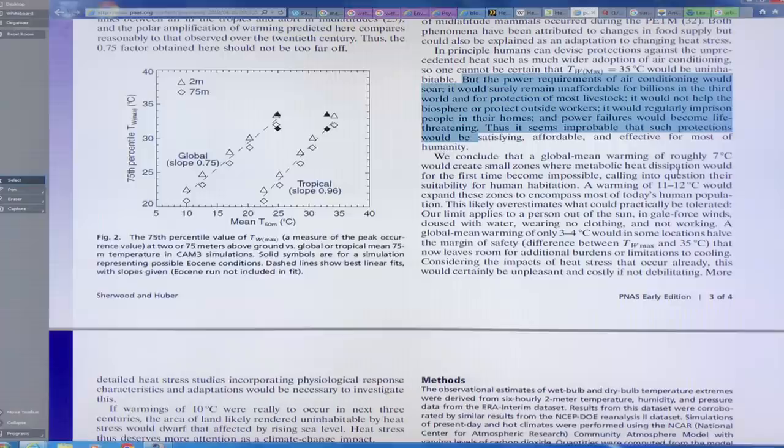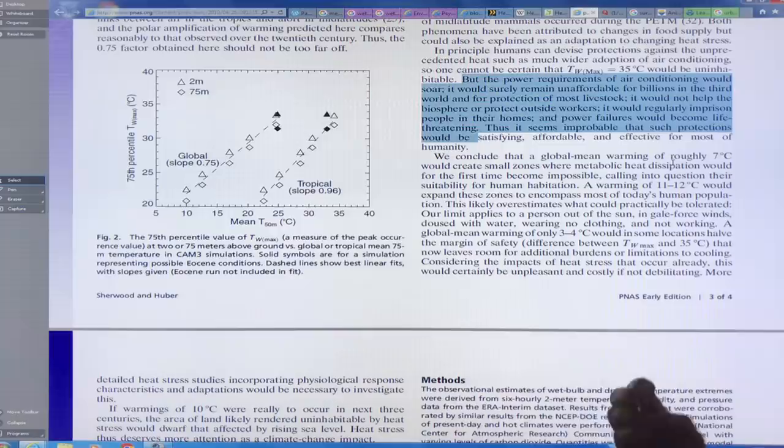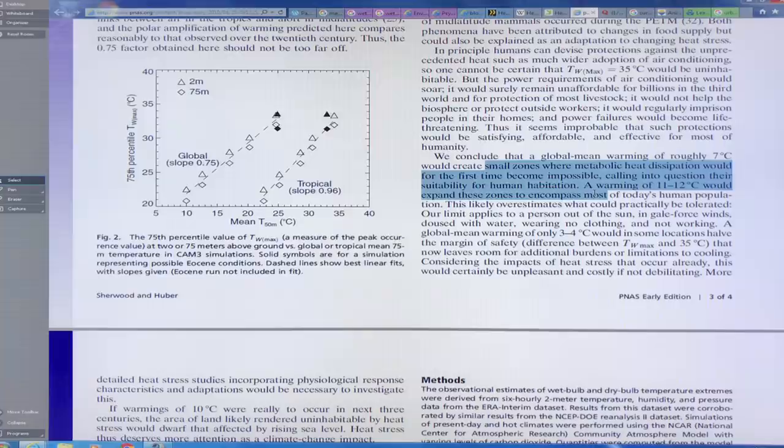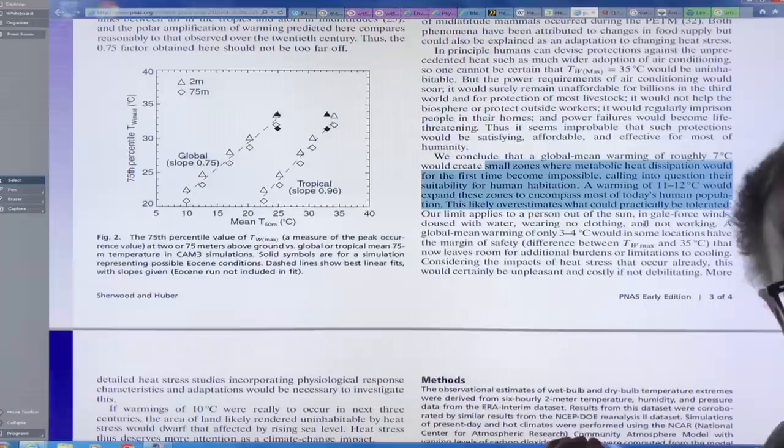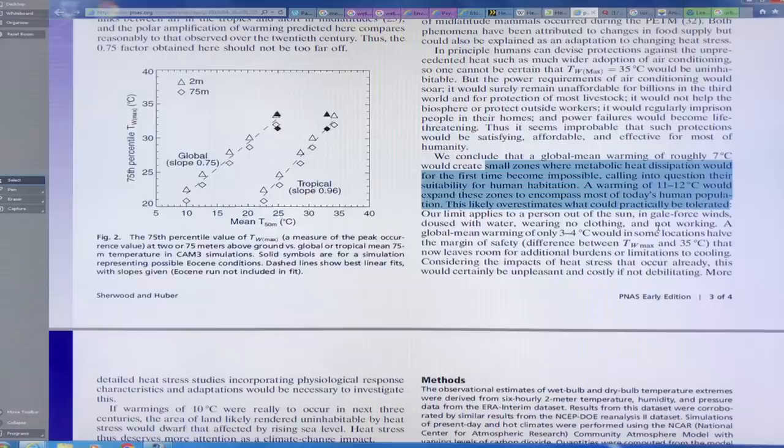So with seven degrees Celsius, now again, don't focus on the seven. Maybe it's really five or four or three. This number, but what will happen is there'll be small zones where metabolic heat dissipation would become impossible. Warming of 11 to 12 would expand those zones to include most of humans population. This limit applies to a person out of the sun, in gale force winds, doused with water at the air temperature, wearing no clothing, and not working. Our body's trying to get rid of 100 watts. There's simply no way to do it.